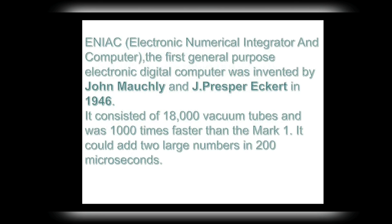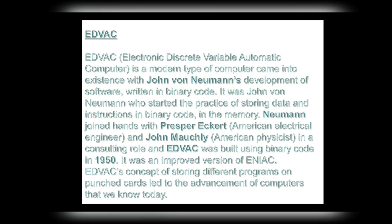ENIAC — the first general-purpose electronic digital computer — was invented by John Mauchly and J. Presper Eckert in 1946. It consisted of 18,000 vacuum tubes and was a thousand times faster than the Mark I. It could add two large numbers in 200 microseconds.